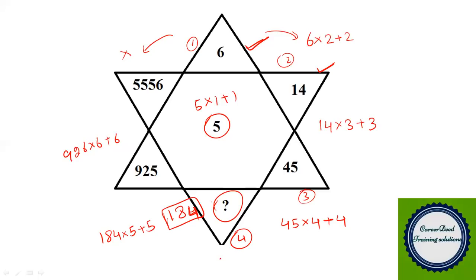For this you should have a basic idea of numbers. By looking at the second number you can easily come to a conclusion — the number at the second leaf is approximately two times the number at the first leaf. So 6 × 2 = 12, then add 2 to get 14. In this way you can easily identify the relationship between numbers in the picture. The answer for this question is 184.